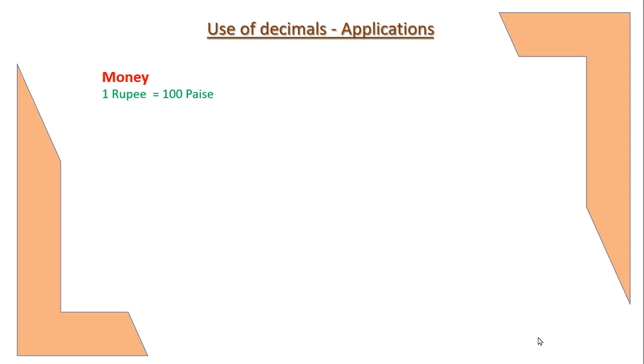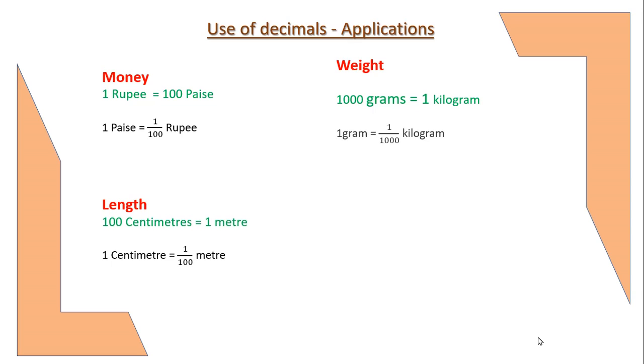equals to 100 paise. 1 paise is equals to 1/100 rupee. In length, 100 centimeters is equals to 1 meter. 1 centimeter is equals to 1/100 meter.